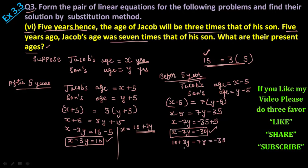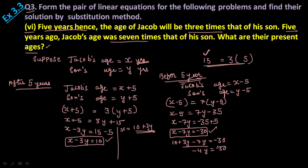So here you will get minus 4y and minus 30. This plus will become minus 10 on that side, so you will get minus 4y is equals to minus 40, minus minus will get cancelled. And you will get minus 4y is equal to minus 40 by 4, that will be 10. So son's age is 10 here.